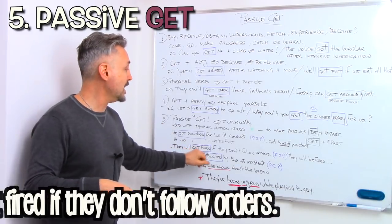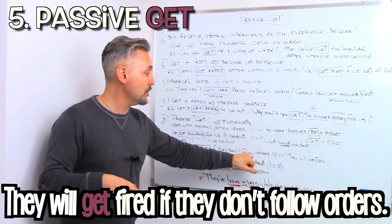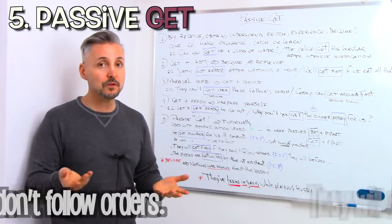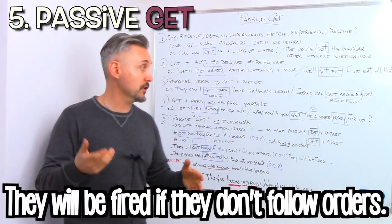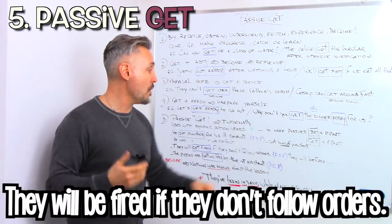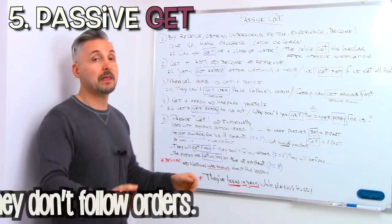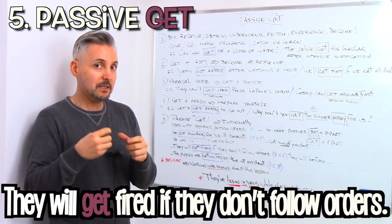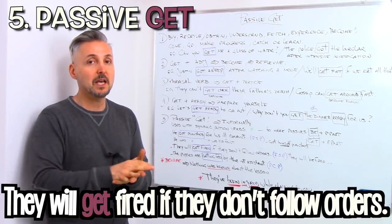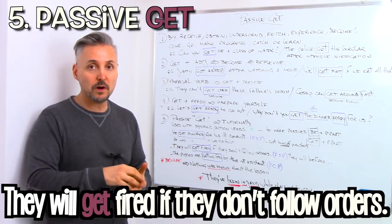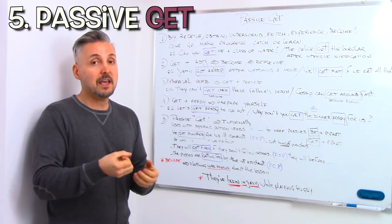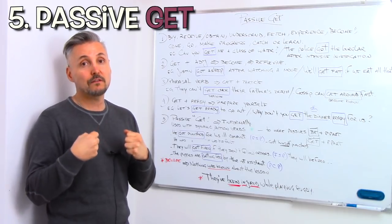Another example, they will get fired if they don't follow orders. This is the future simple passive. As opposed to, they will be fired if they don't follow orders. They will get themselves fired. So it's their fault, right? It's their fault. They are probably not coming on time for work, or they have other problems, and they get themselves fired.